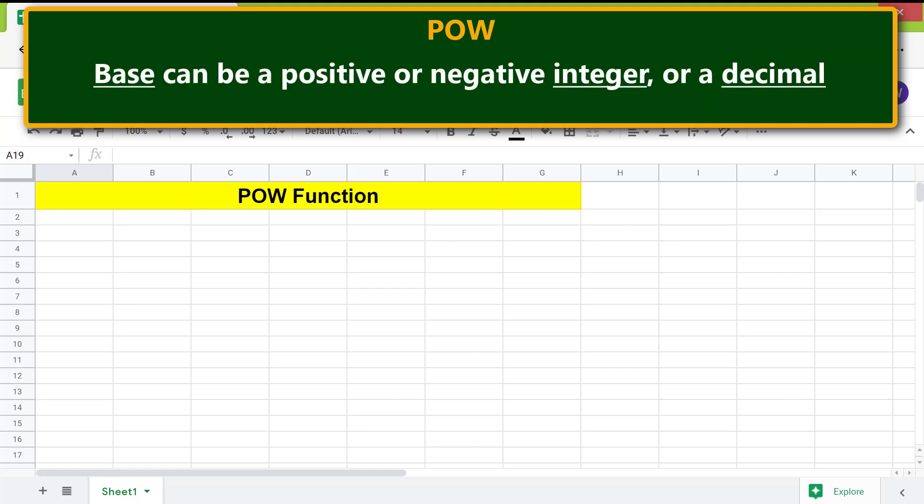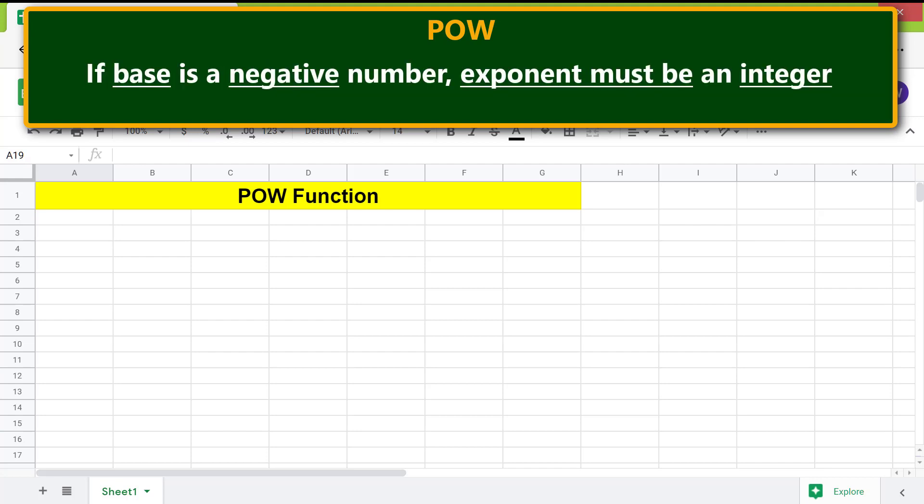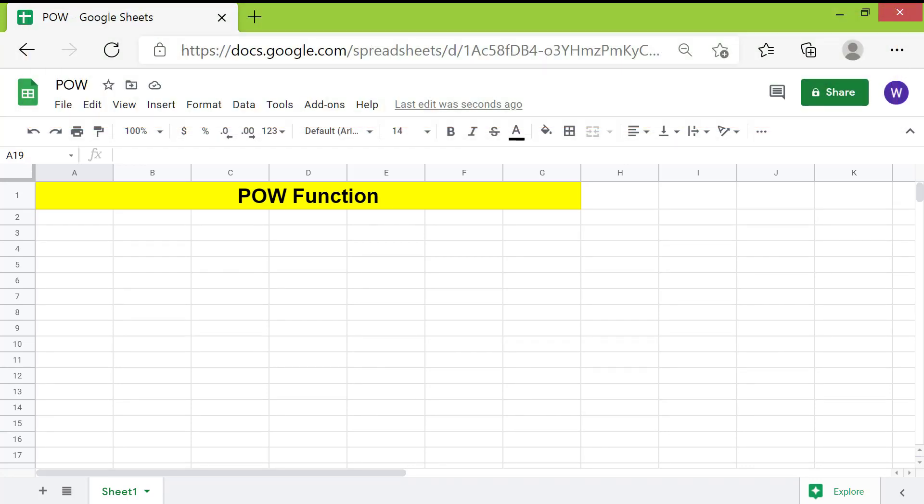Base can be a positive or negative integer or a decimal. Exponent can be a positive or negative integer or a decimal. If base is a negative number, exponent must be an integer. Let's look at the format of the power function formula.